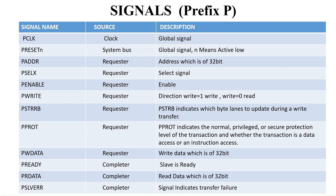APB4 has a total of 12 signals — APB3 had 10 signals, and two more were added: PSTRB and PPROT. The first signal is PCLK, the clock signal. It is a global signal. All APB signals are timed against the rising edge of PCLK. In APB, the prefix 'P' is used for all signal names, just as 'H' is used as a prefix in AHB and 'A' in AXI.